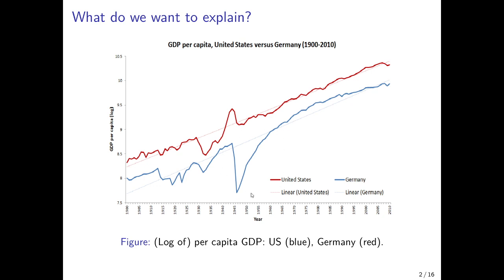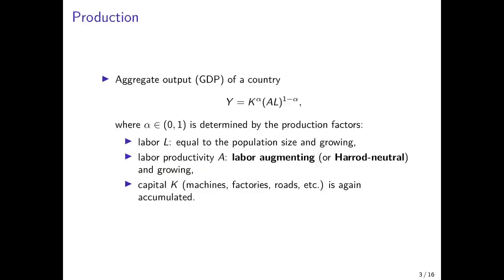And we have the convergence phase of Germany after the Second World War that we described in the previous video. We will see that this extended version of the model can also explain it. We again have the production function that relates aggregate output or GDP to the input factors capital and labor, where labor is multiplied with labor productivity — so we have effective labor within parentheses.